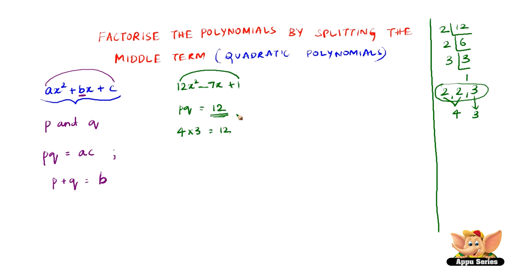So we found pq which gives us 12, but the same pq when added also should give us minus 7. So will it give us, let us see, so 4 plus 3 is 7, yes it does.